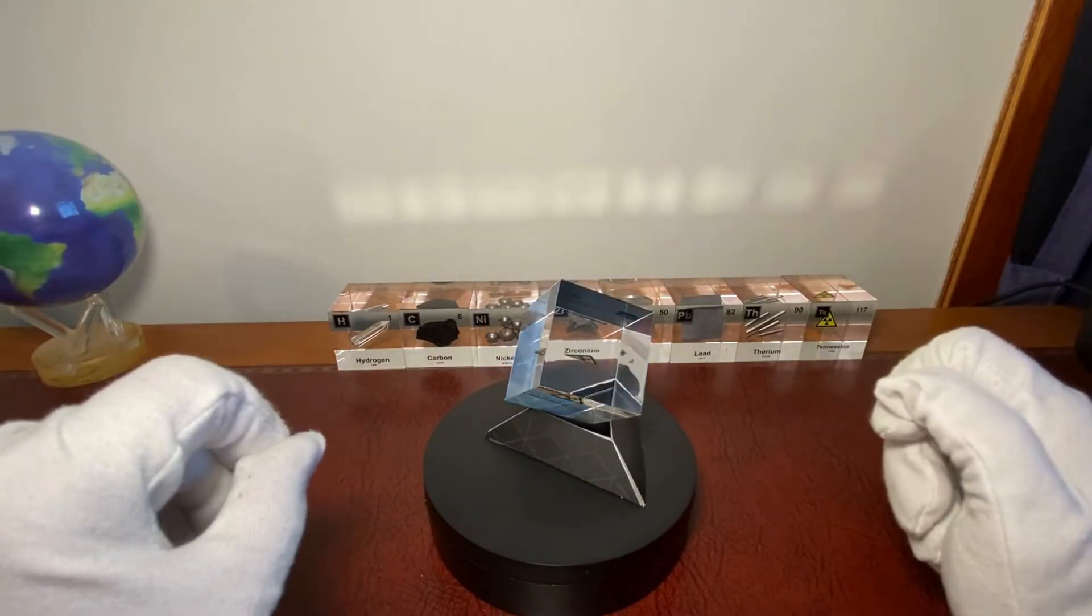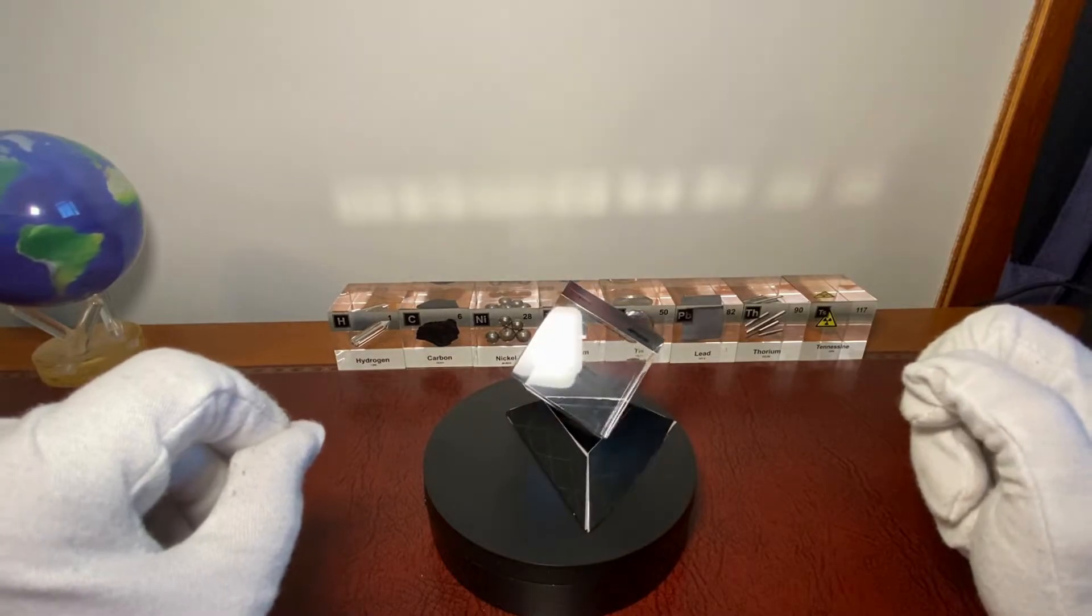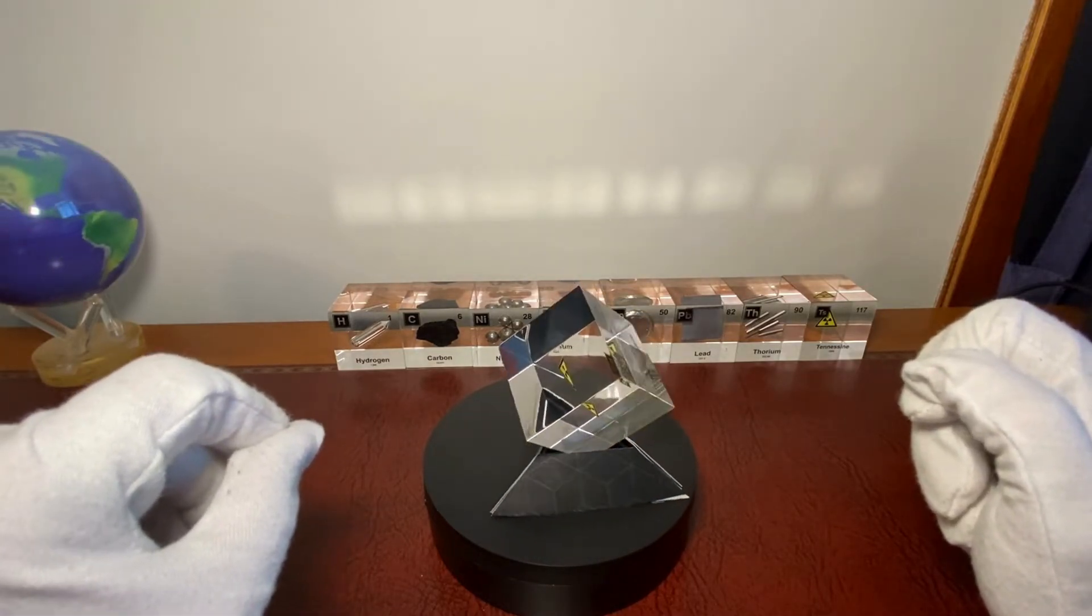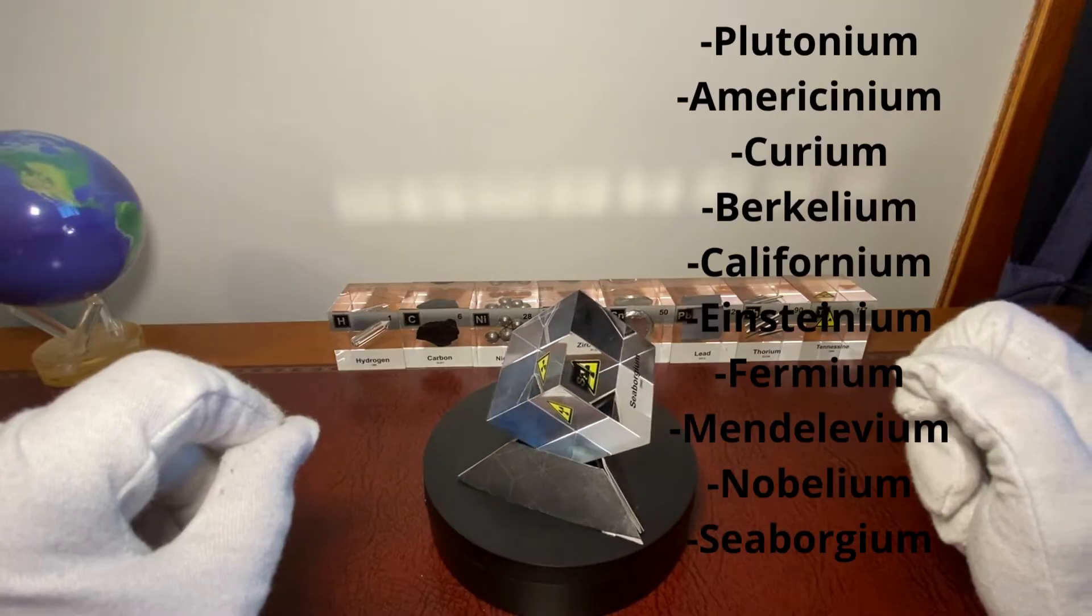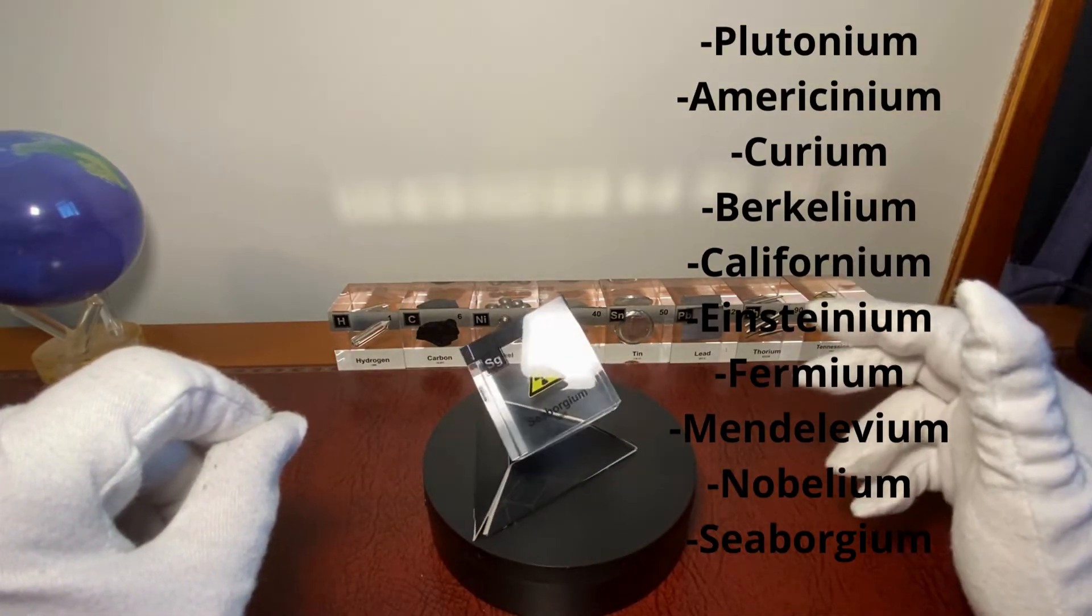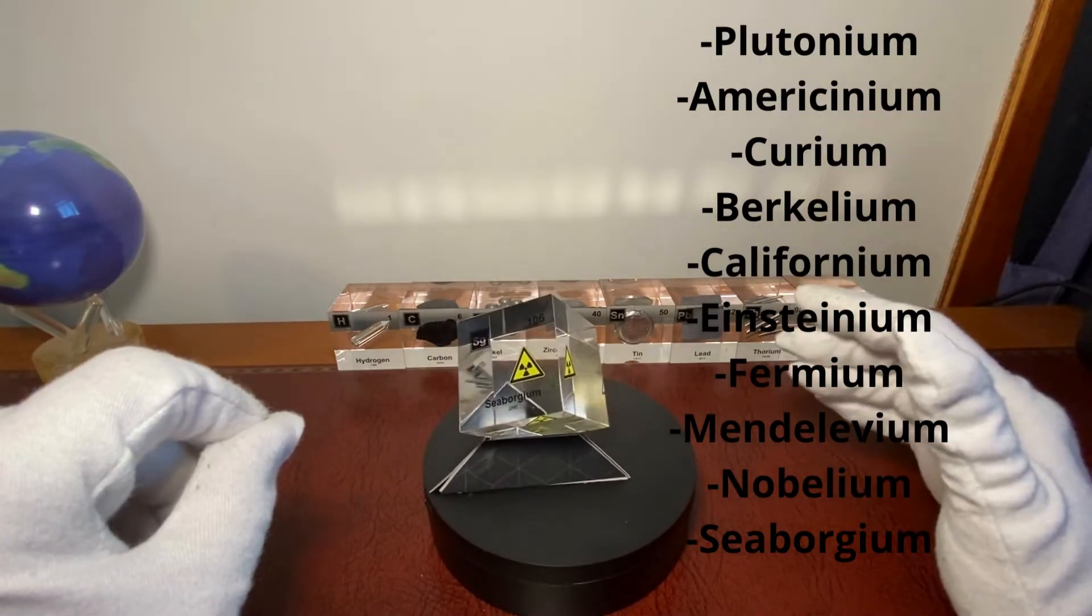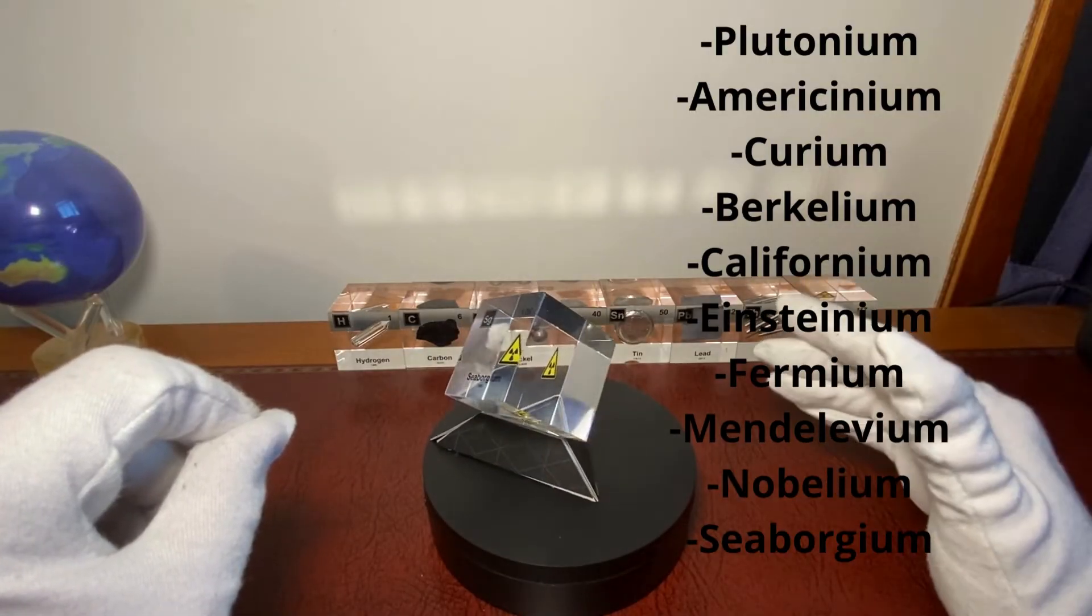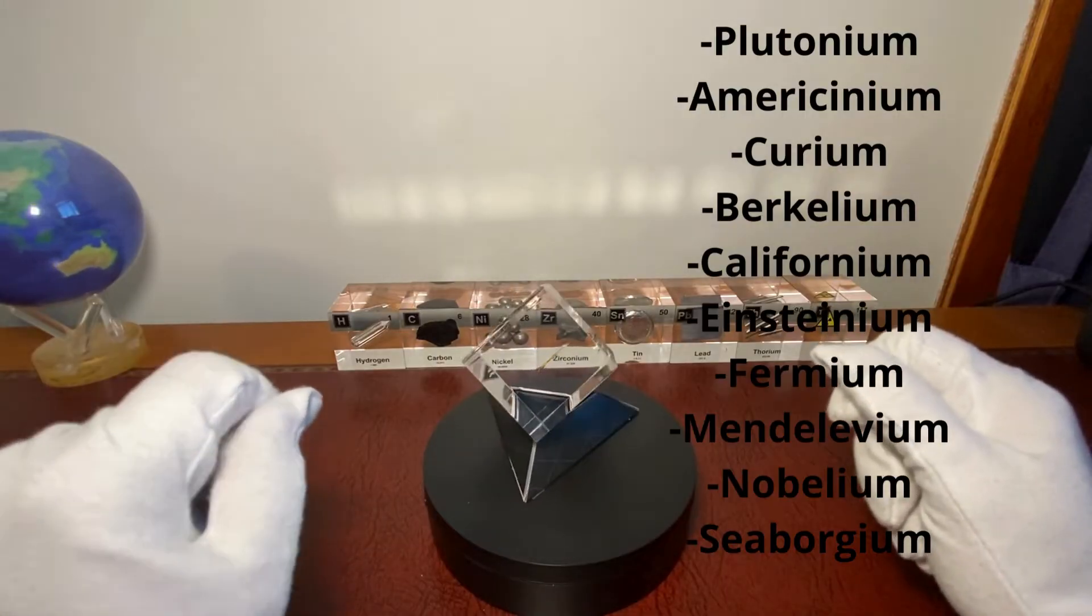Glenn T. Seaborg was an American chemist and physicist who, along with his research team, was responsible for the discovery of many elements: plutonium, americium, curium, berkelium, californium, einsteinium, fermium, mendelevium, nobelium, and finally element 106, which was named after him, Seaborgium.